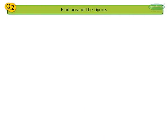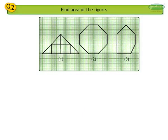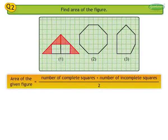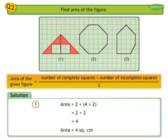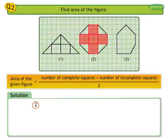Question 2: Find the area of the figure. Number 1 solution: In the figure there are 2 complete squares and 4 incomplete squares. Area of the given figure is equal to number of complete squares plus number of incomplete squares divided by 2, equals 2 plus 4 divided by 2, equals 2 plus 2, equals 4 square centimeters.